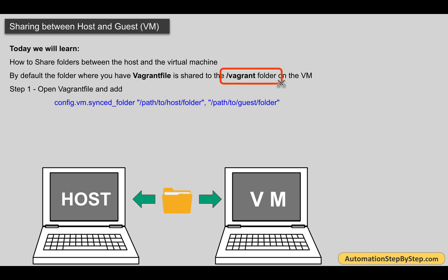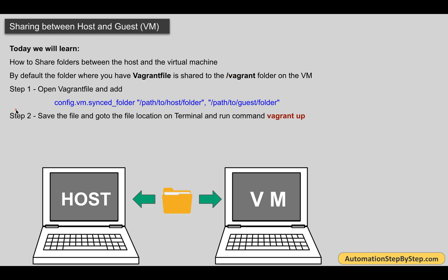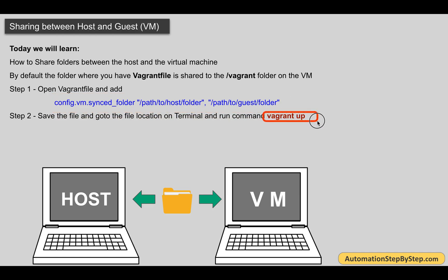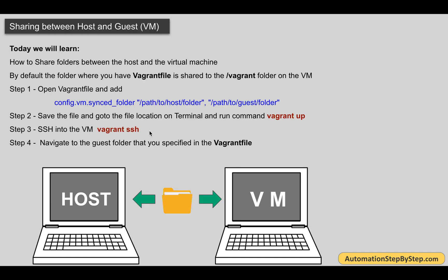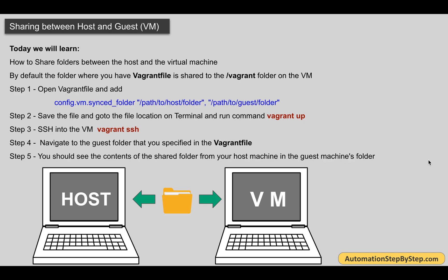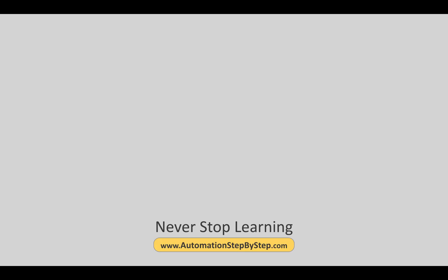If you don't want to sync a separate folder, you can directly use the vagrant folder which is already synced by default. After adding the sync line, you start or restart your virtual machine — you can say 'vagrant halt' then 'vagrant up', or just 'vagrant reload'. After it restarts successfully, go to the virtual machine with 'vagrant ssh' and check the synced folder. I hope this was useful — never stop learning, thank you for watching!